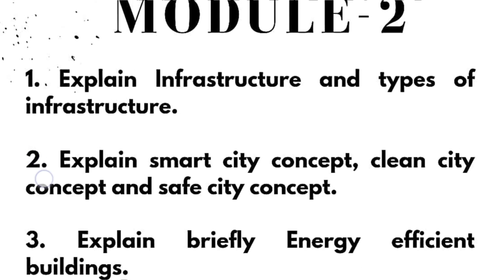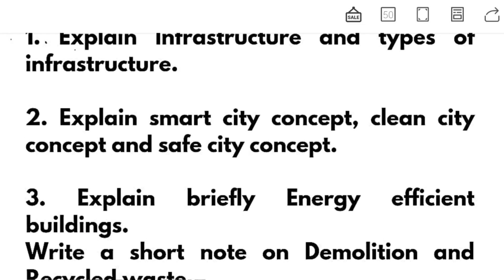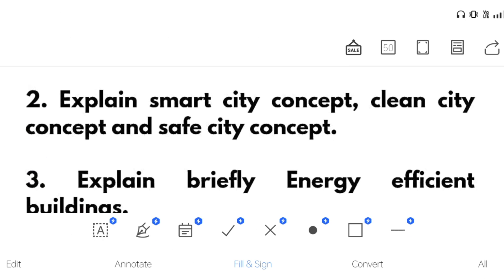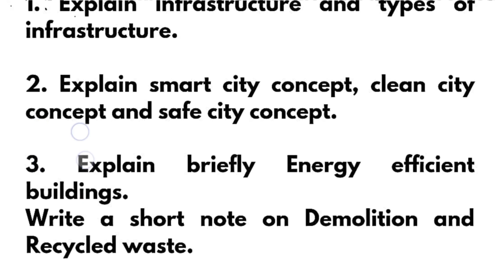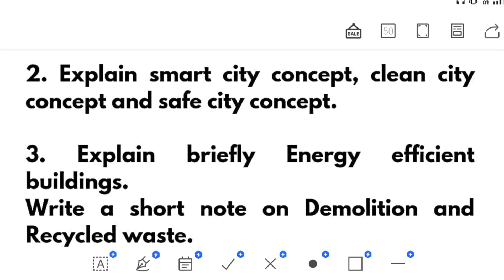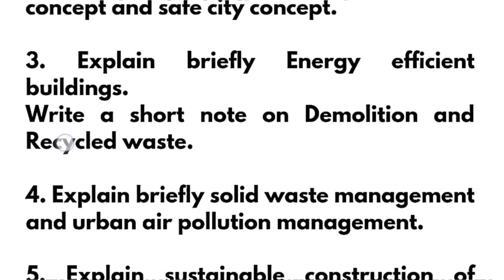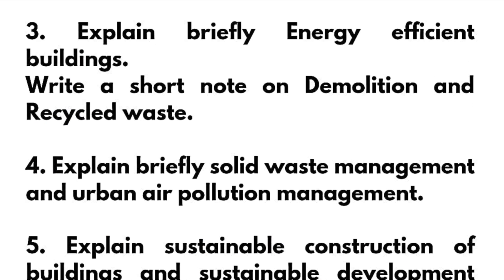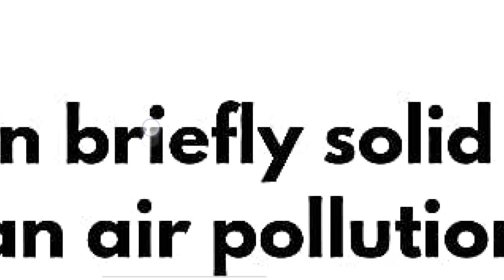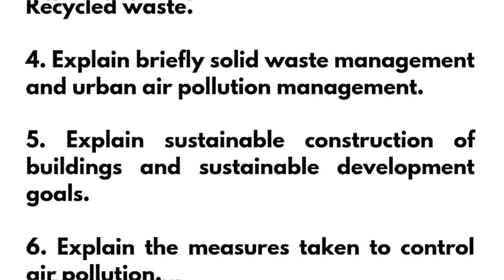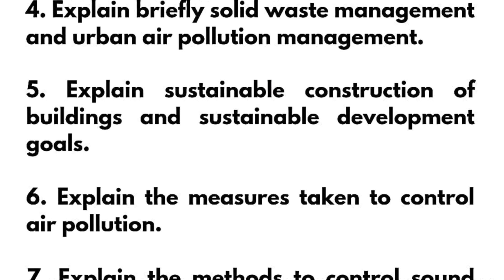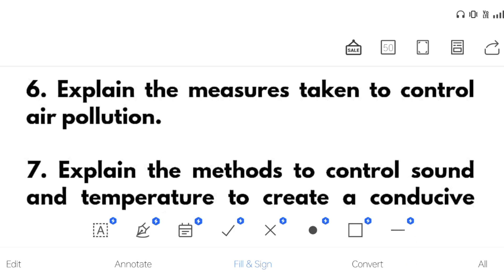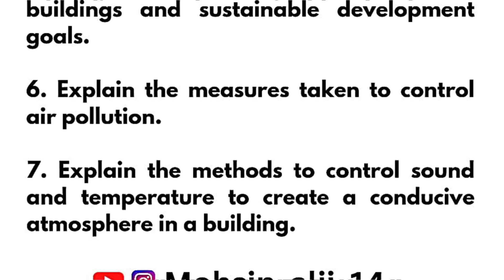Next we have module 2: explain infrastructure and types of infrastructure. Next, explain smart city concept, clean city concept and safe city concept. Explain briefly energy efficient buildings. Write a short note on demolition and recycled waste. Explain briefly solid waste management and urban air pollution management. Next, explain sustainable construction of buildings and sustainable development goals. Next, explain the measures taken to control air pollution and the methods to control sound and temperature to create a conducive atmosphere in a building.